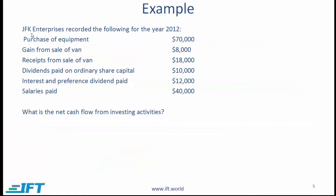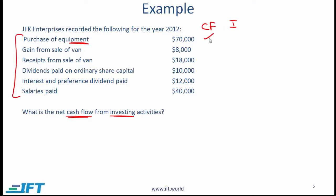Let us look at a quick example. JFK Enterprises recorded the following items, and we need to determine the net cash flow from investing activities. For a question like this, you need to look for two things: whether each item is a cash flow, and whether it is an investing activity. Purchase of equipment — this is a cash flow, and equipment falls under investing activity, so this is investing.